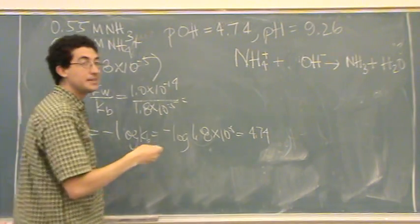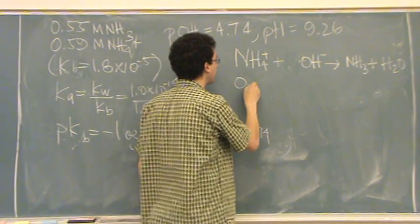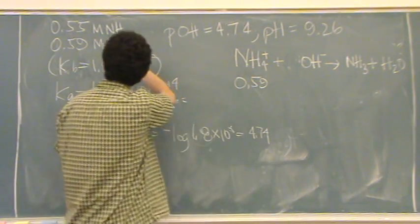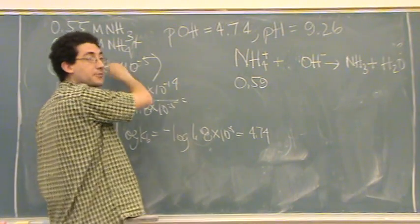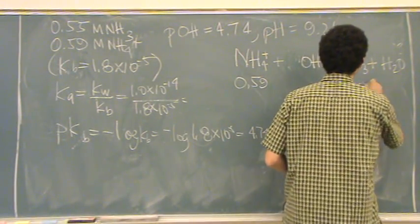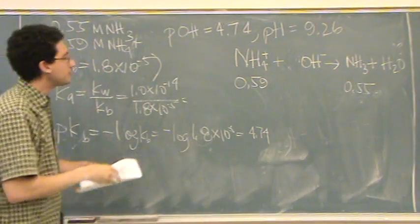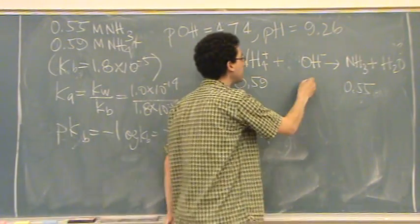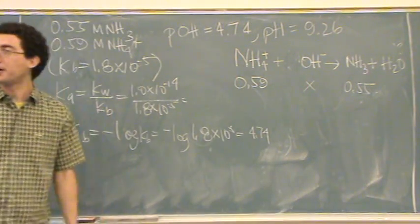So now I knew initially from a previous part of the problem, which I just wrote down for you. It's 0.59 for this, and 0.55 for that one. And I don't know how much of this I'm adding, and that's the problem.